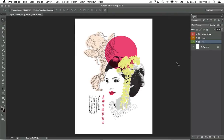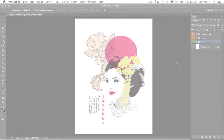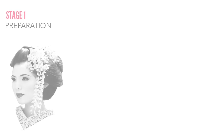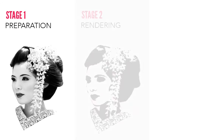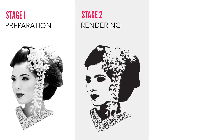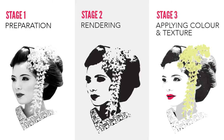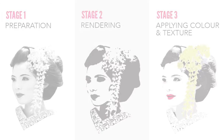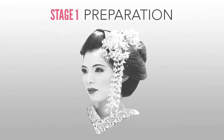To create this artwork I have broken the process down into three main steps: stage one preparation, stage two rendering, and stage three applying color and texture. If at any point you wish to skip ahead or back to any of these steps you can find the times displayed in the description. So let's get into it and start with the preparation stage.